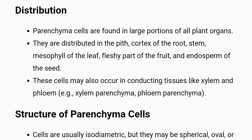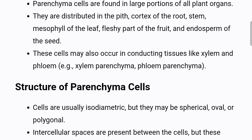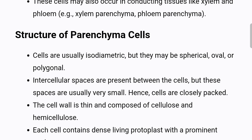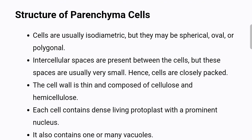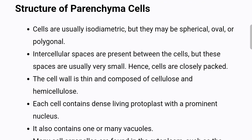Structure of parenchyma cells: Cells are usually isodiametric, but they may be spherical, oval, or polygonal. Intercellular spaces are present between the cells, but these spaces are usually very small.